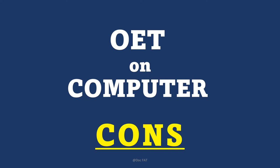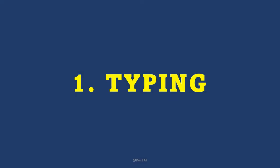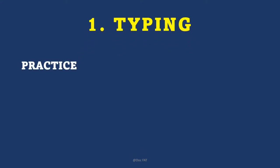Okay, number one is typing. How is typing a con? For some it is, for some it may not be, but for most of us it is. Since we've been little children, maybe 20-25 years, we have been writing. We've developed innate reflexes and muscle memory about writing. When attempting the listening part, for example, we are just writing without really thinking about it.